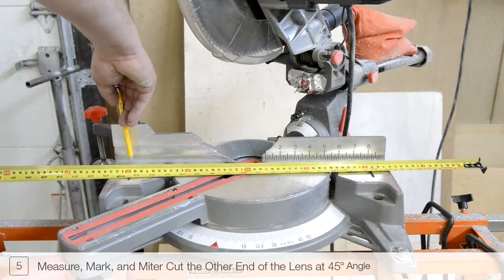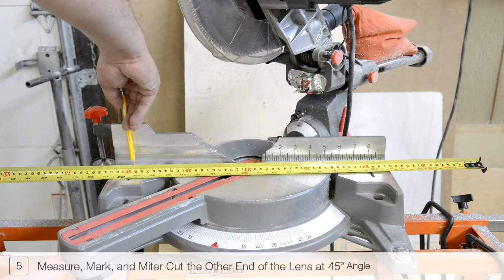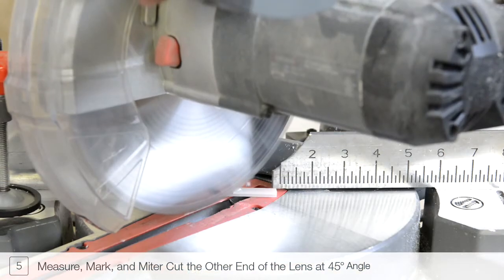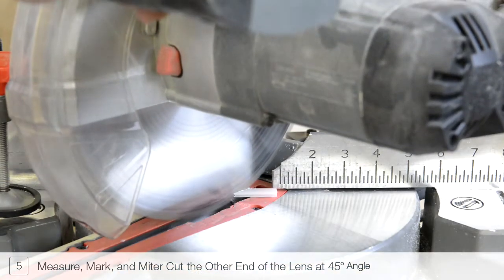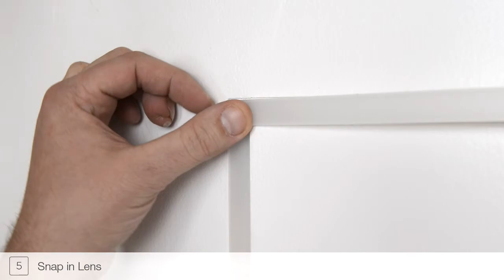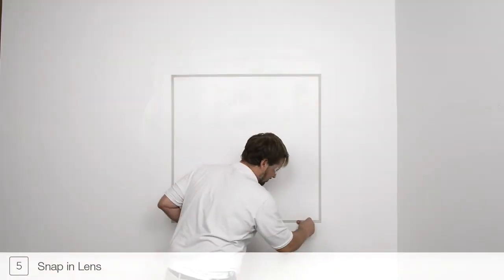Measure, mark and miter cut each length of lens to match the measured lens opening. Press the lens into the channel, making sure that it is fully seated.